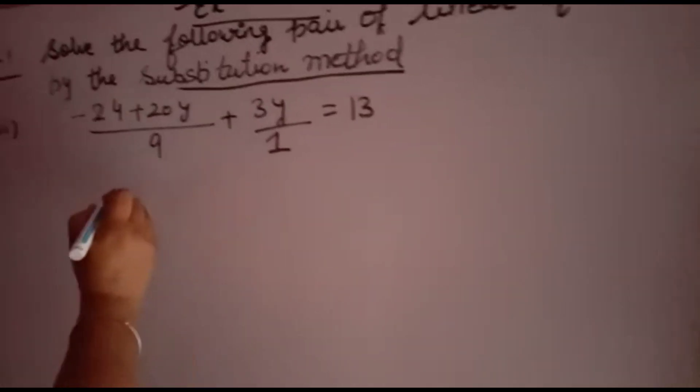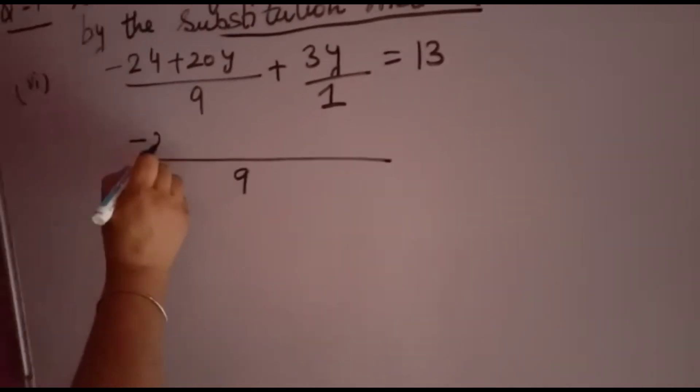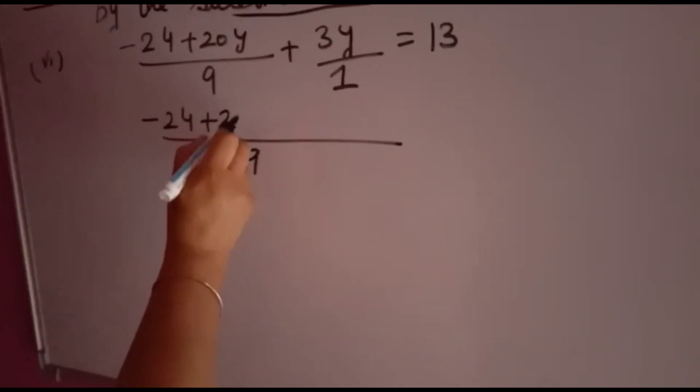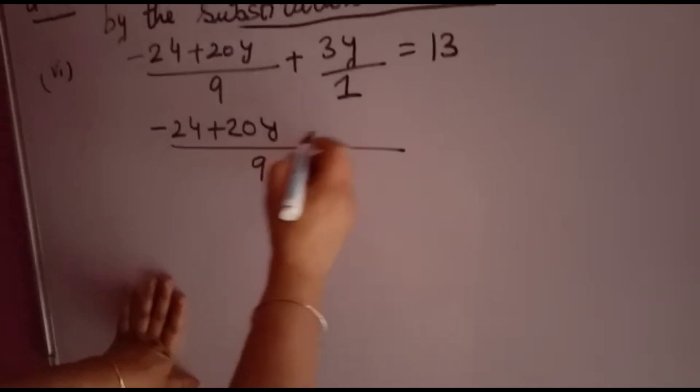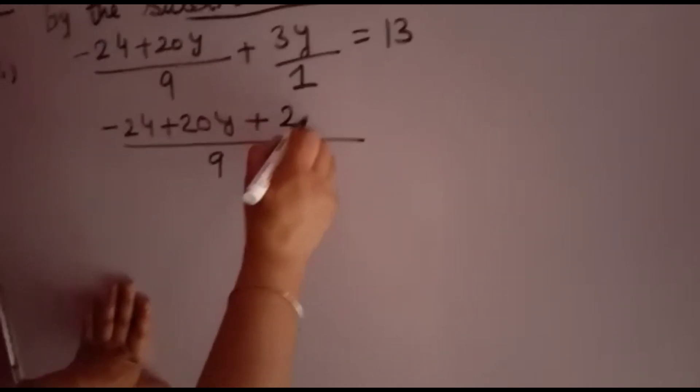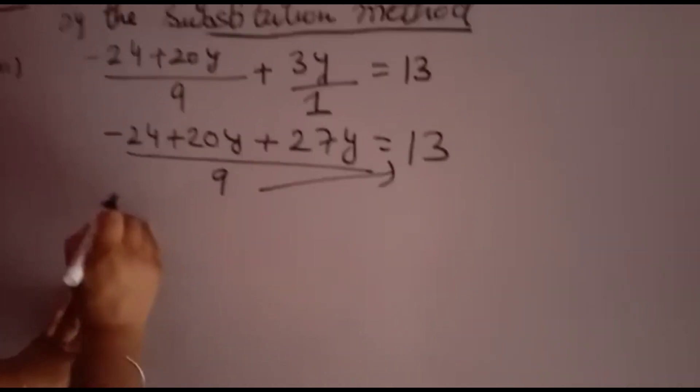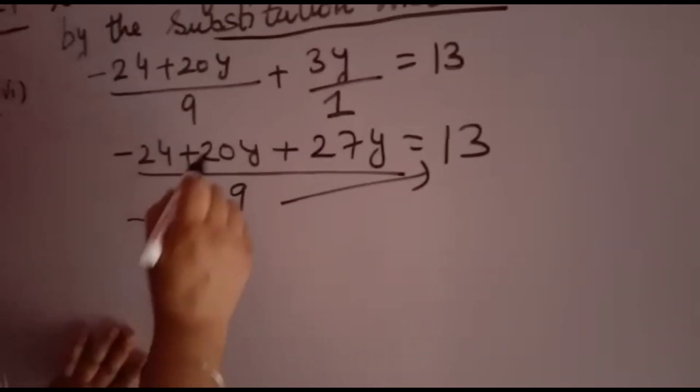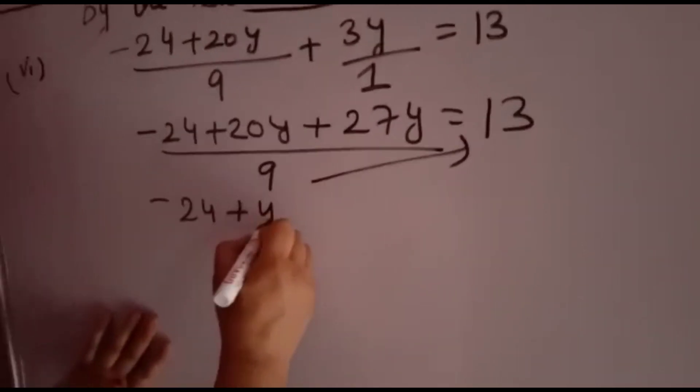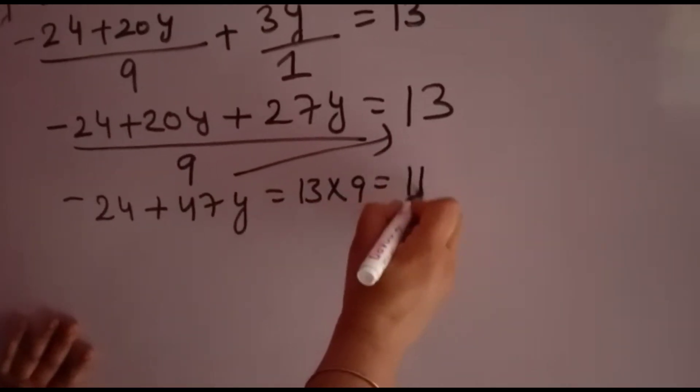Now you will take LCM of 9 and 1, it will come 9. 9 divided by 9 is 1, so this 1 into any number same only. You will write as it is. Then 9 divided by 1 is 9, 9 into 3y that is 27y is equal to 13. 9 will go that side in next step. Now minus 24 plus 20y plus 27y, 47y is equal to 13 into 9 that is 117.